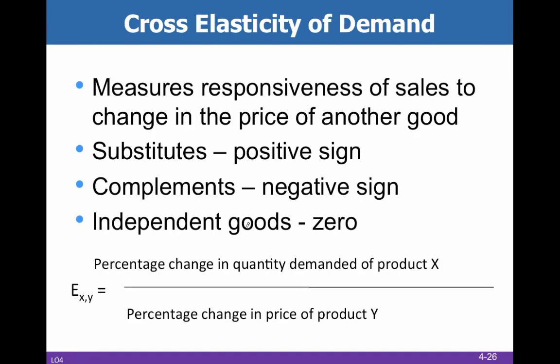The next concept is cross elasticity, or cross price elasticity. In elasticity of supply and demand we took absolute value and ignored the sign, but in cross price elasticity we must pay attention to the sign because it tells us whether we're dealing with substitutes or complements. Our typical substitute example is Pepsi and Coke, and our typical complement example is peanut butter and jelly. Coke and Pepsi would have a positive sign — yes, they're substitutes.